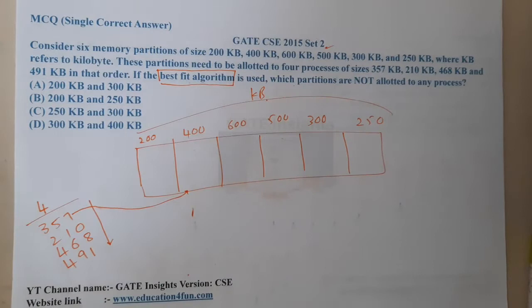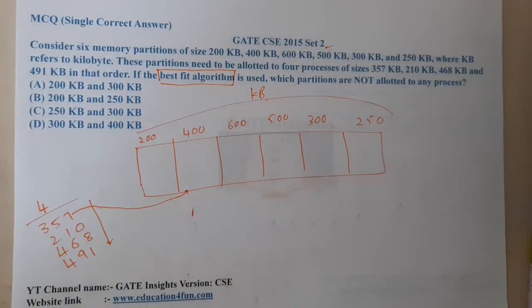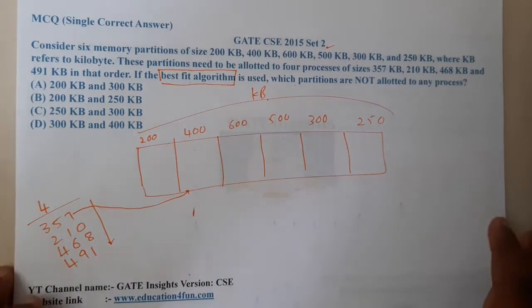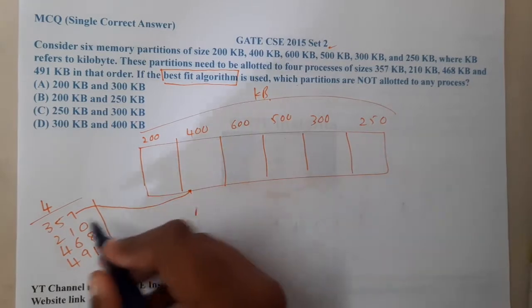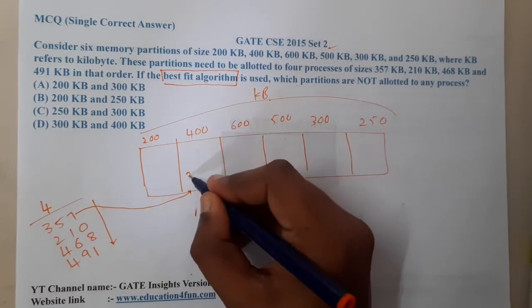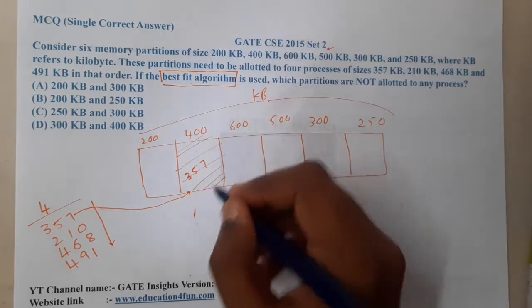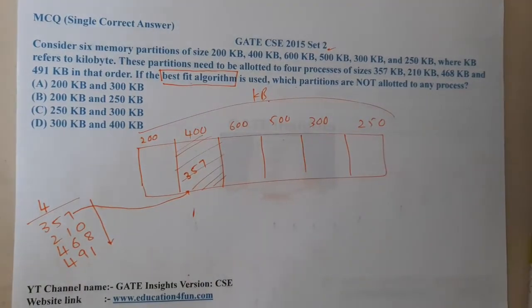400 minus 357 is nothing but 43. So the difference is 43, which is nearer. That is the reason why I will place 357 here. So now this spot is filled. Now moving on to 210.